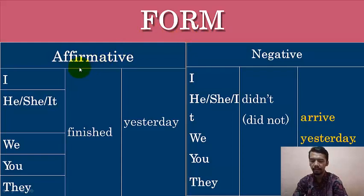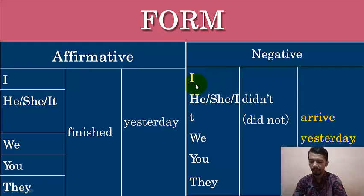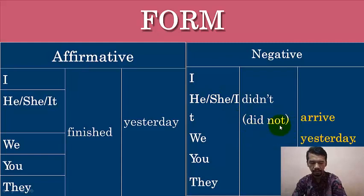Now, how do we form sentences — affirmative, negative, and interrogative? In learning sentences, we can change any affirmative sentence to negative and interrogative. Affirmative means a positive sentence. Look at the table here — these are the subjects, the personal pronouns in English. For example, the affirmative sentence: 'I finished yesterday.' How do we change the sentence to negative? After the subject, we put 'did' plus 'not.'